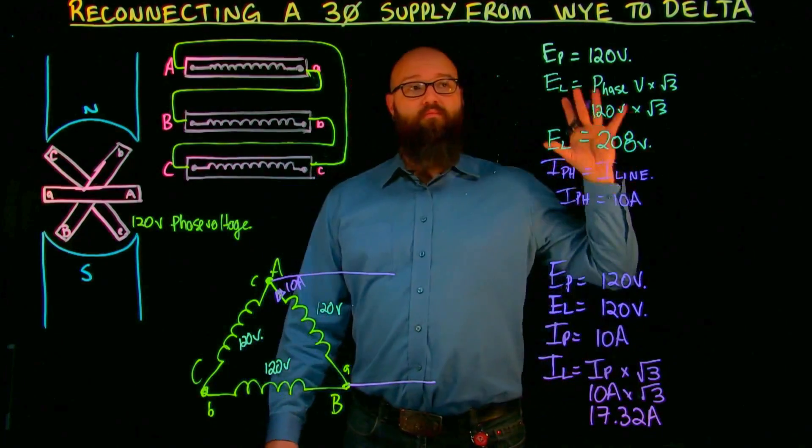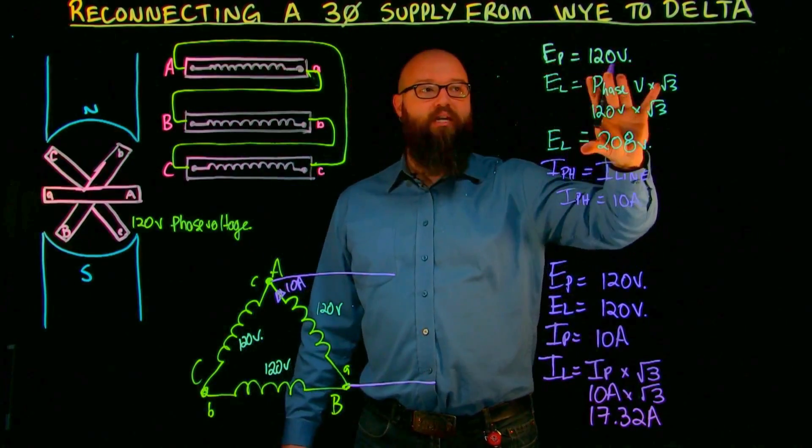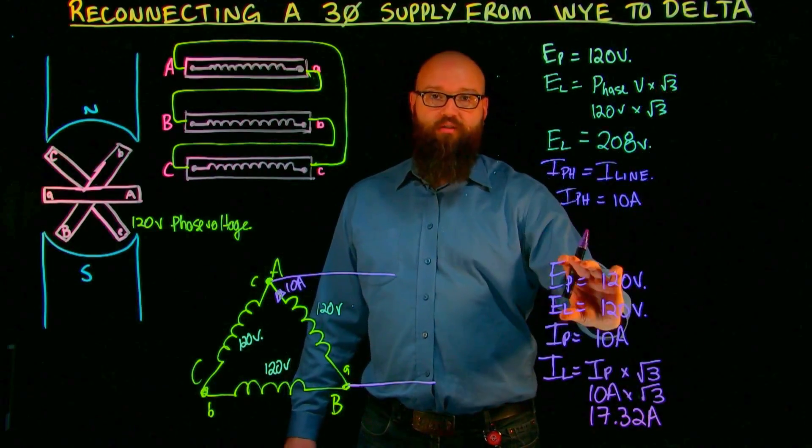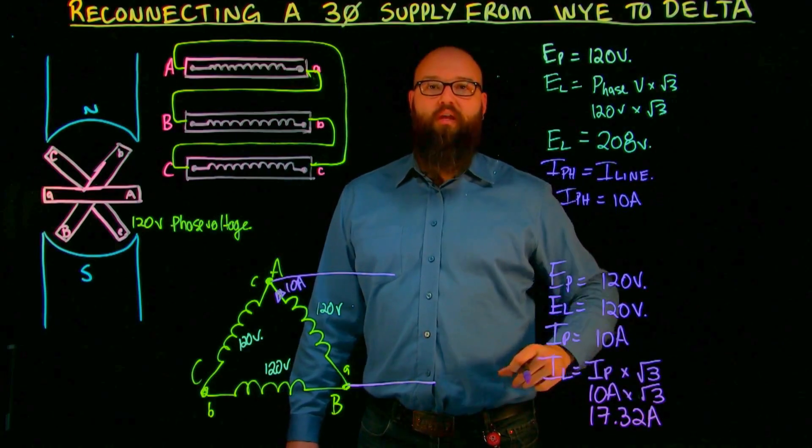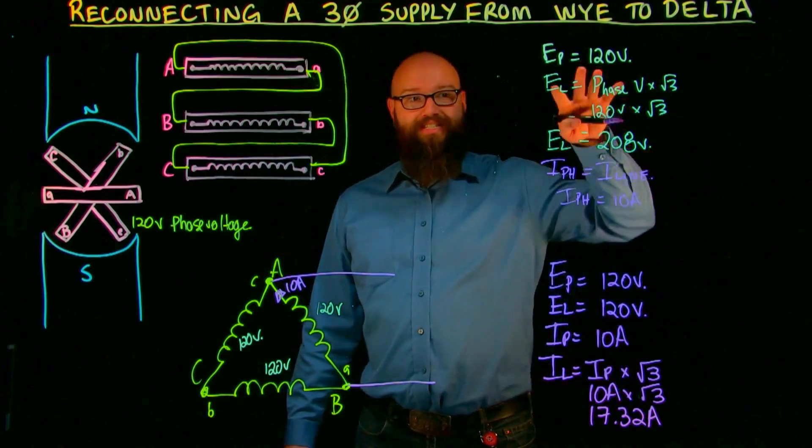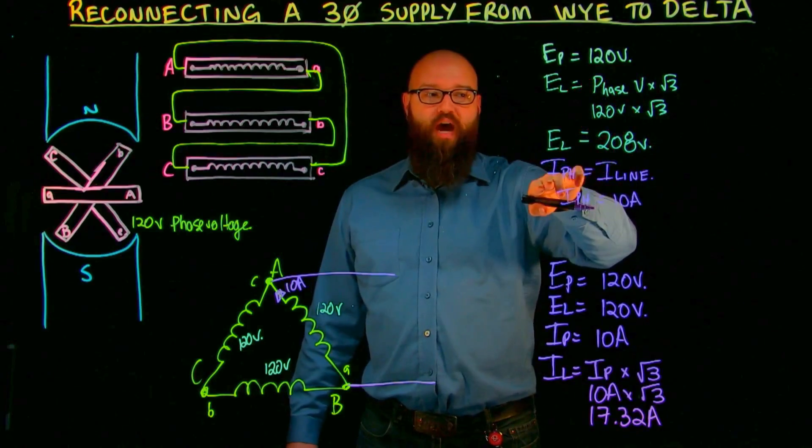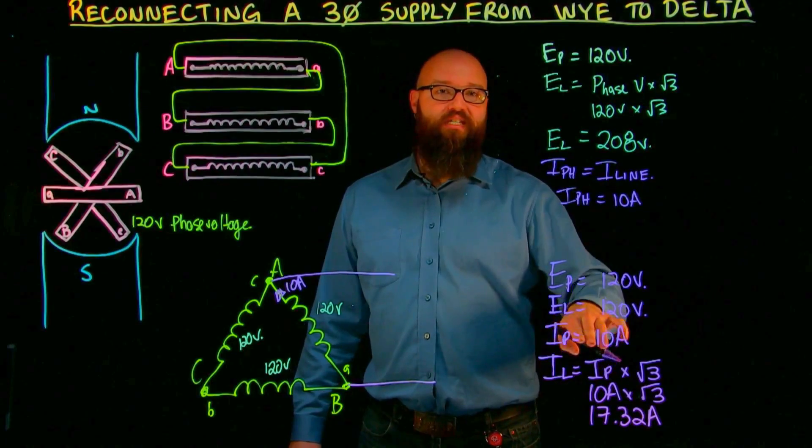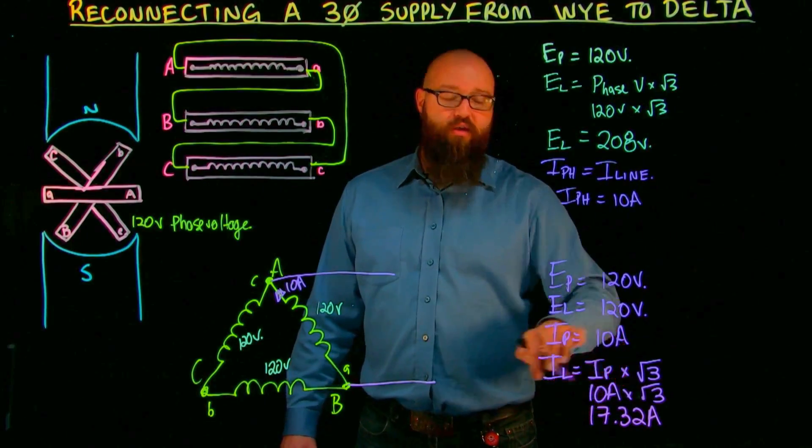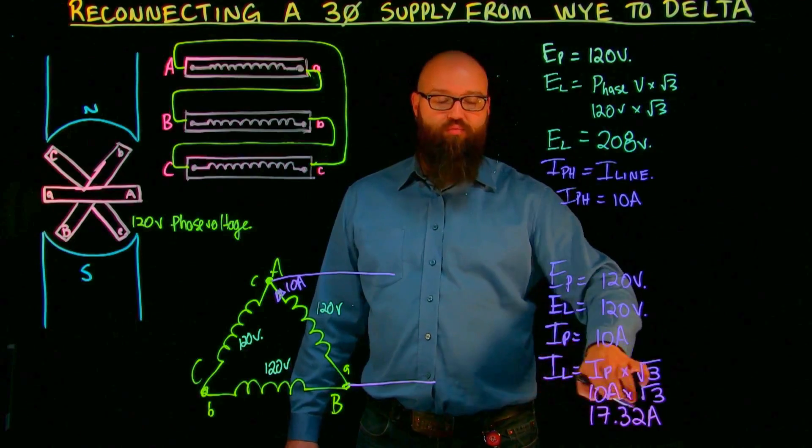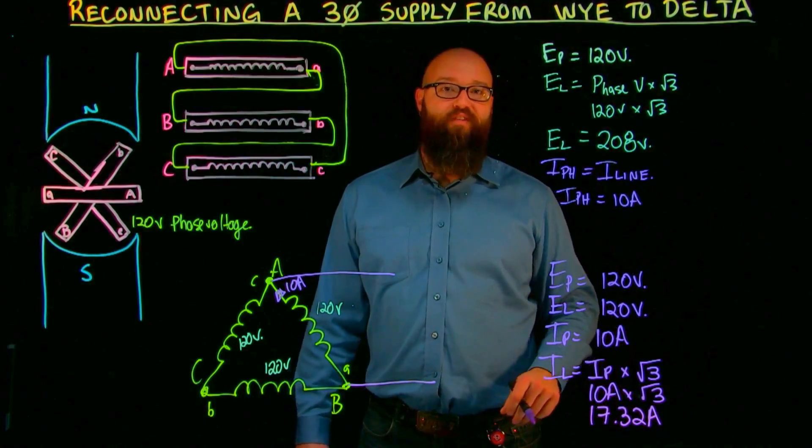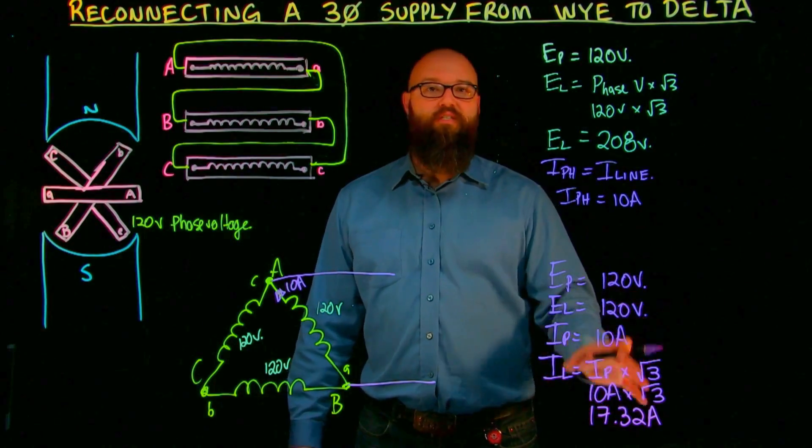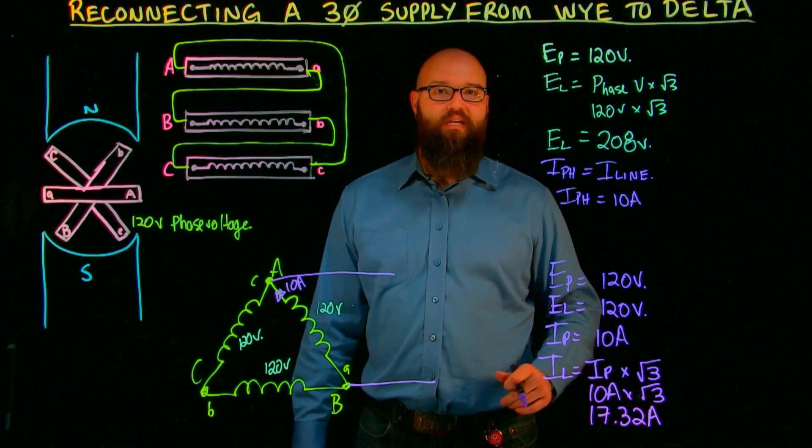So again, in a Y connected system, we have root three larger voltage line to line. In a delta connected system, my phase voltage is equal to my line voltage. In my Y connected system, I phase is equal to I line. In my delta connected system, I phase is root three smaller than I line, or you could say I line is root three greater than I phase. So we essentially, we increase the amount of current output on this system just by reconnecting it in a delta configuration.